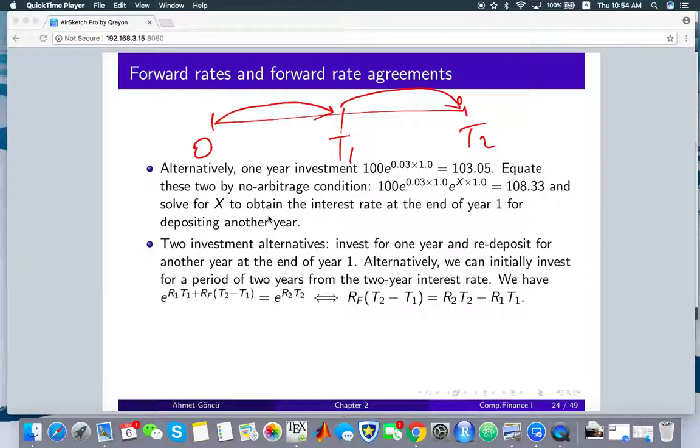then reinvest from t1 to t2 using the forward rates. The second alternative is to directly invest from the beginning until t2 using the zero rates for the maturity t2. In this example, if you invest directly for two years, that's what you get. Alternatively, if you invest for one year, this is what you get.